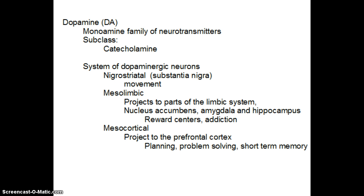Next we're going to take a brief look at dopamine, or DA for short. Dopamine is from the monoamine family of neurotransmitters, in the subclass of the catecholamines. The system of dopaminergic neurons runs throughout the brain, but there are three major systems I want you to be familiar with.